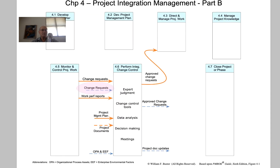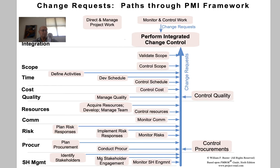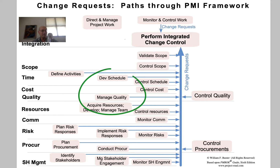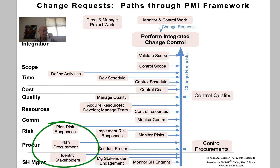We see change requests also coming from many other processes in other knowledge areas, which looks like this — a whole bunch of processes, mostly control, but a lot of execution and even some planning processes. And they all need to go through Perform Integrated Change Control to be reviewed and approved or rejected.